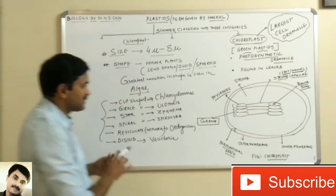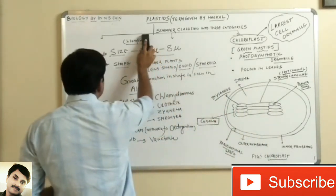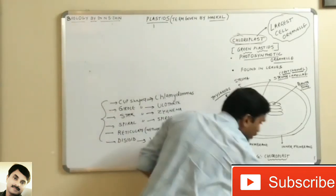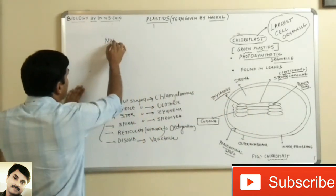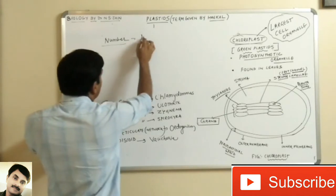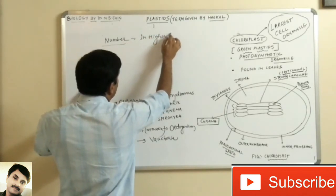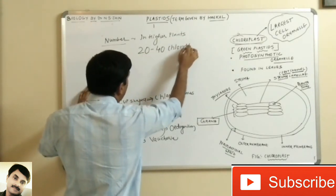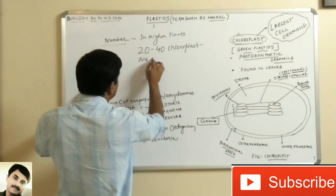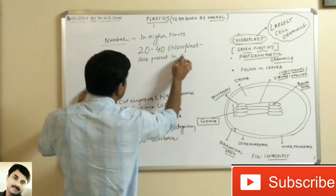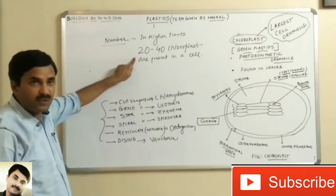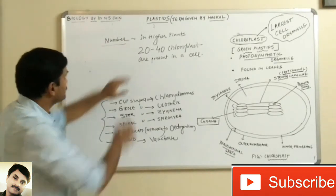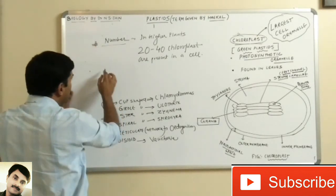The next characteristic is the number of chloroplasts. In higher plants, 20 to 40 chloroplasts are present in a cell.